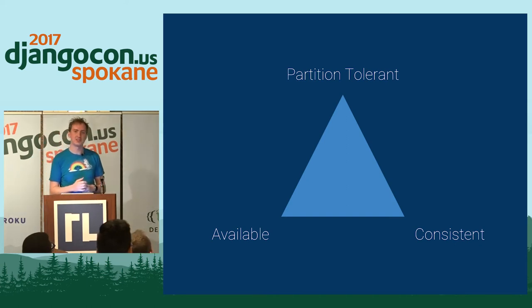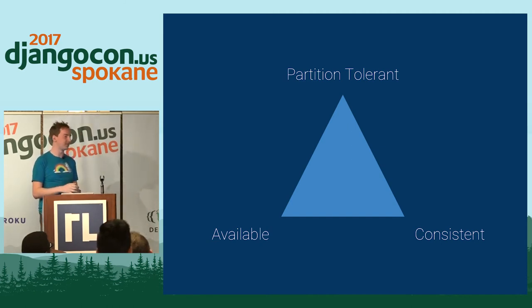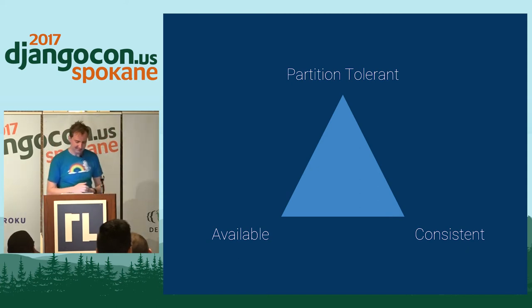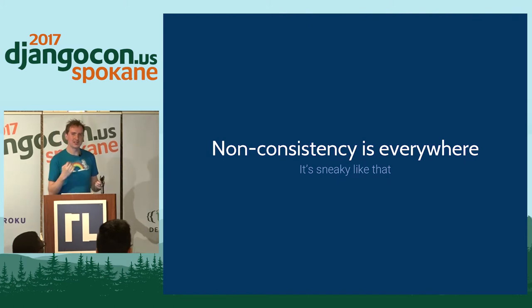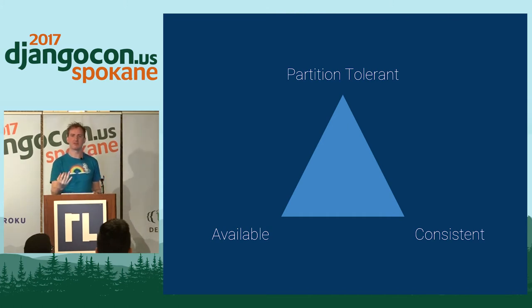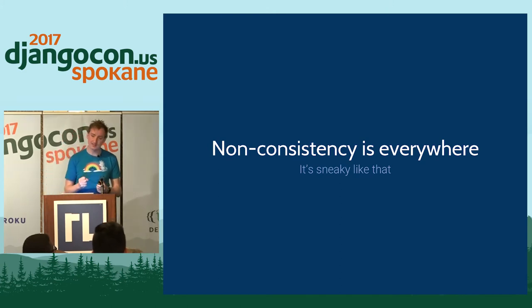This is where the CAP triangle comes into play. Similar to the idiom 'cheap, fast, and good — pick any two,' for databases you get partition tolerance, availability, and consistency — basically at most two of these. Many databases give you maybe half of one if you look at it right. Postgres is in theory partition-tolerant and consistent, but with replication there's still a little inconsistency — it's only truly consistent in a single-machine case. Non-consistency really creeps into all aspects of distributed computing in general.